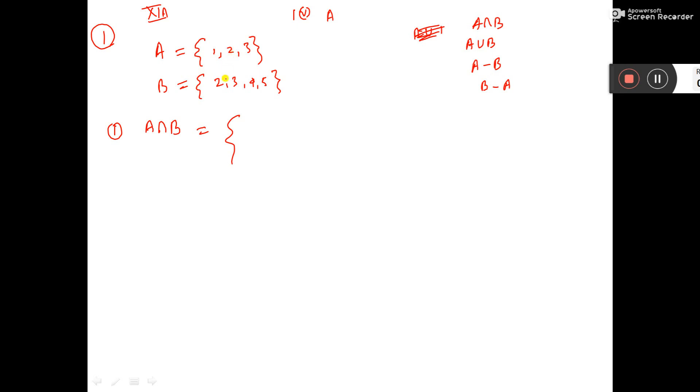2, 2 is here, 2 is there also. Intersection, it will come. 3 is there, here also. So all are checked, the common element I have taken, this is A intersection B.